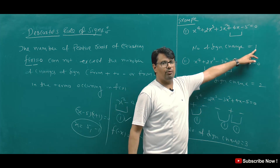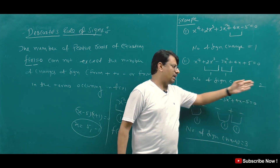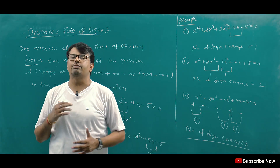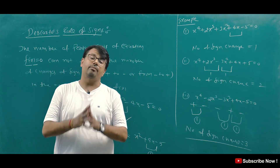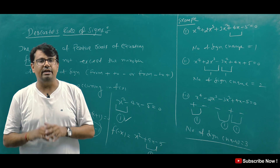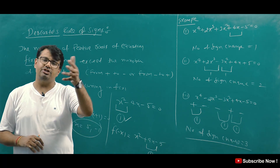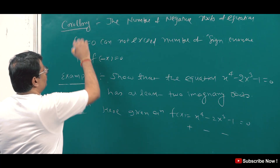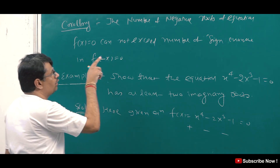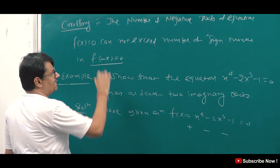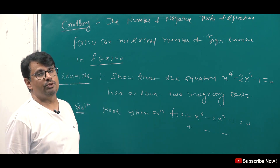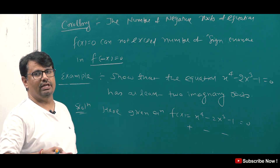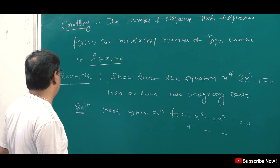Here the maximum positive roots will be 1; here the positive roots will be 2; here the positive roots will be 3. In this way we can know the number of positive roots and negative roots. If you know the positive roots, negative roots, and the degree of the equation, then you can find the imaginary roots. The corollary states: the number of negative roots of equation F(x) = 0 cannot exceed the number of sign changes in F(-x) = 0.